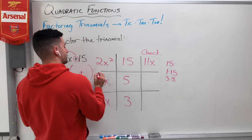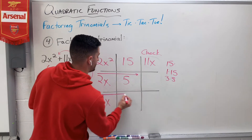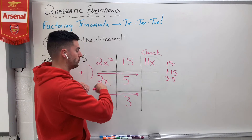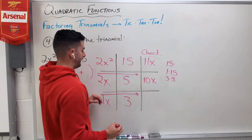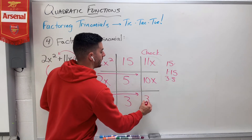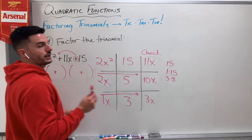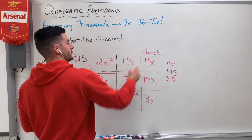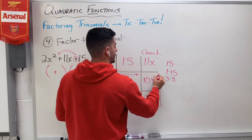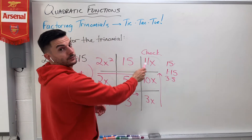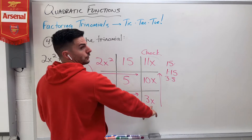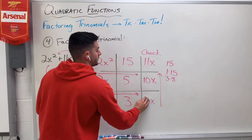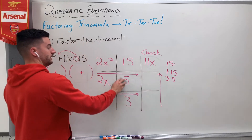Our check is to multiply side to side. So I do 2x times 5, which gives me 10x. And then 1x times 3 gives me 3x. Now I want to check — does 3x plus 10x equal 11x? No, unfortunately it does not. So that means I messed up my pairs — this 5 and 3. I need to pick another pair. But I don't necessarily need to pick a whole new pair, because I had 5 and 3. Sometimes it works to just flip them around.